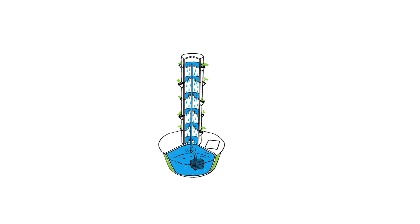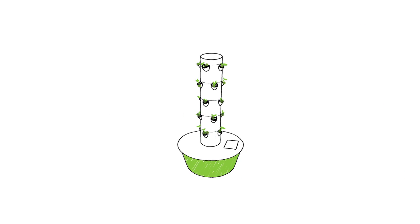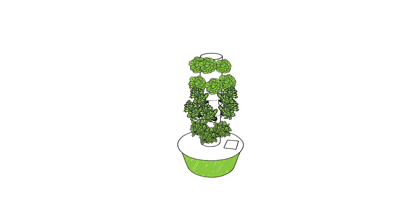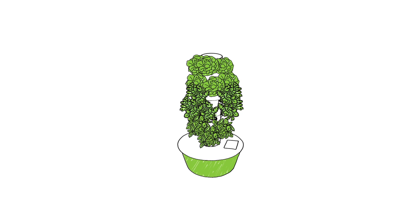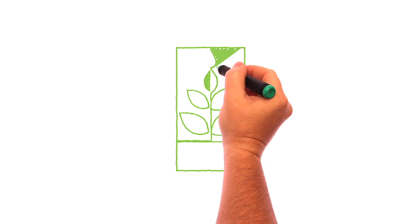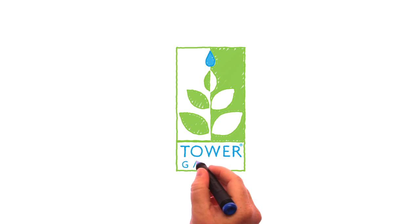This patented aeroponic process enables food crops to grow faster than they would in soil, so they can be harvested more often. And it makes Tower Garden the healthier, easier, smarter way to grow your produce.